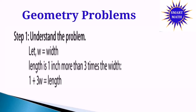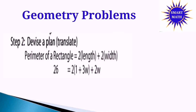Step 1: Understand the problem. Let W equal the width. The length is 1 inch more than 3 times the width, so in mathematical equation: L = 1 + 3W. Step 2: Devise a plan. Perimeter of a rectangle equals 2 times the length plus 2 times the width. The perimeter is 26, and the length is 1 + 3W, so our equation is 26 = 2(1 + 3W) + 2W.